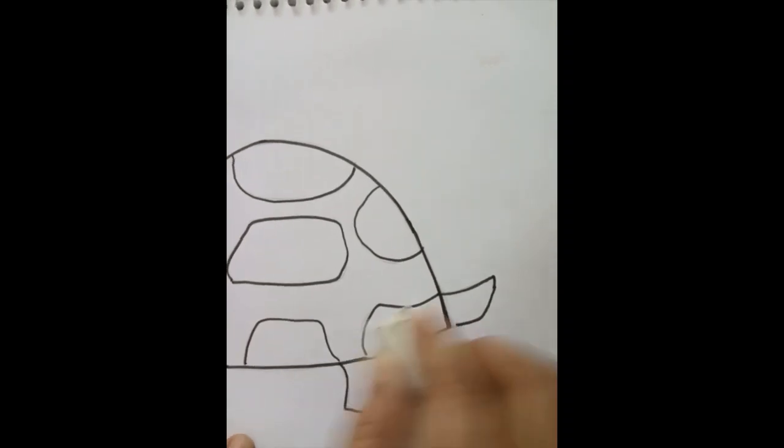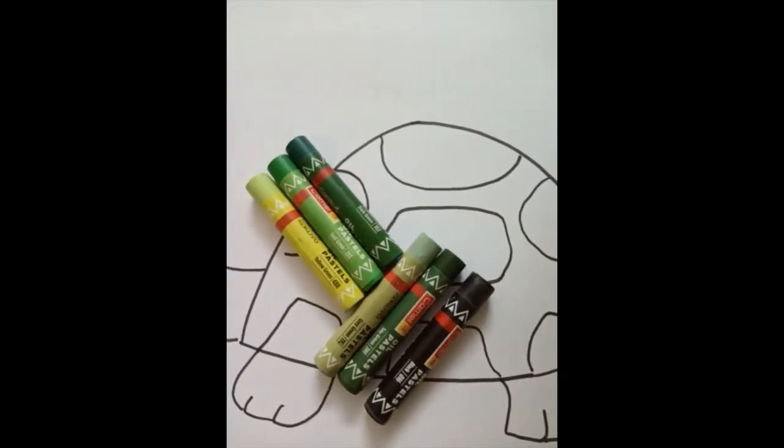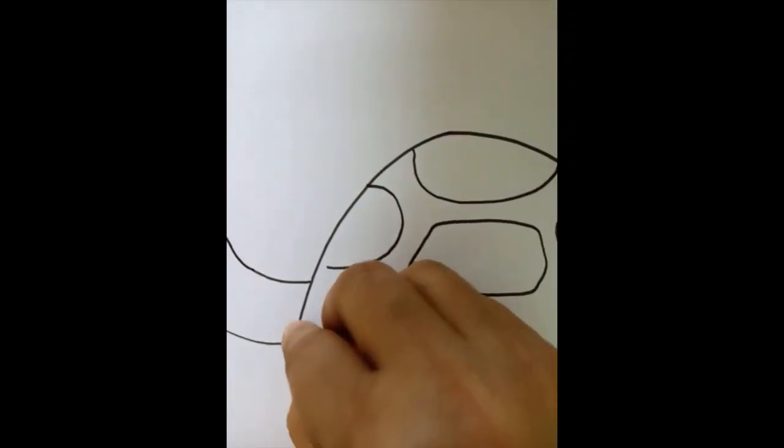Now erase the extra lines. Now we will start coloring. Using black color to color the boundaries.